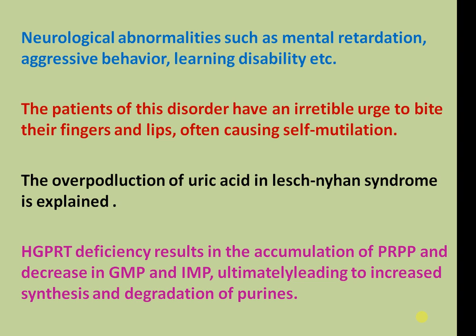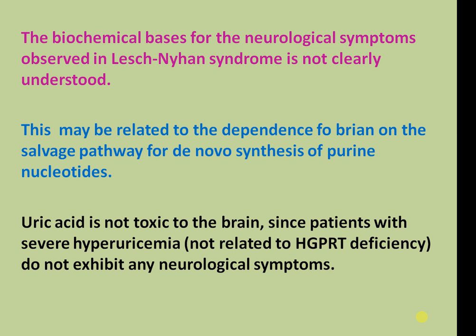The overproduction of uric acid in Lesch-Nyhan syndrome is explained as follows: HGPRT deficiency results in accumulation of PRPP and decreases in GMP and inosine monophosphate, ultimately leading to increased degradation of purines. The biochemical basis for the neurological symptoms observed in Lesch-Nyhan syndrome is not clearly understood. This may be related to the dependence of the brain on the salvage pathway for de novo synthesis of purine nucleotides. Uric acid itself is not toxic to the brain, since patients with severe hyperuricemia not related to HGPRT deficiency do not exhibit neurological symptoms.